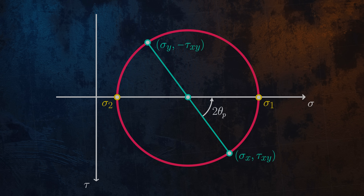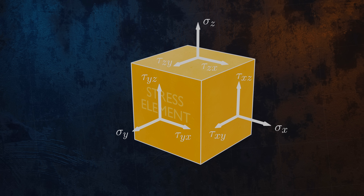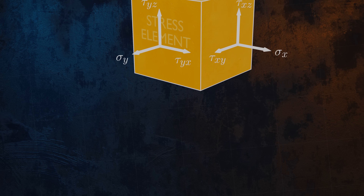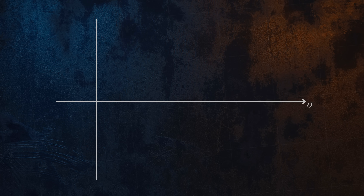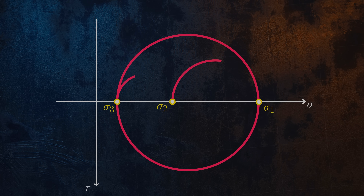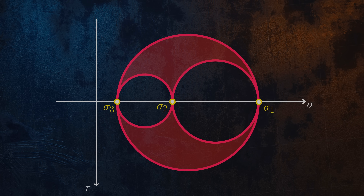So far, we have only looked at a two-dimensional case, but we can extend what we have learned to three dimensions. A three-dimensional stress element looks like this. In three dimensions, we have three principal stresses, which by convention are numbered from largest to smallest. Mohr's circle in three dimensions is made up of three different circles, drawn as shown here. All possible combinations of normal and shear stresses for our 3D stress element lie on the boundary of or within this shaded area.